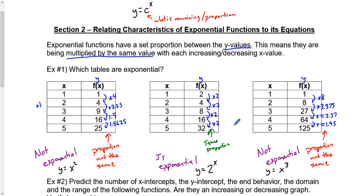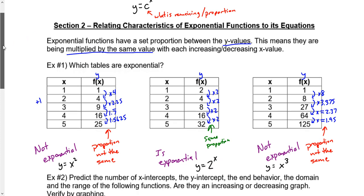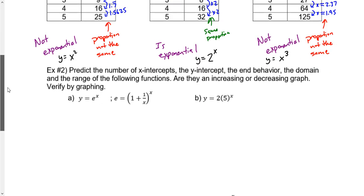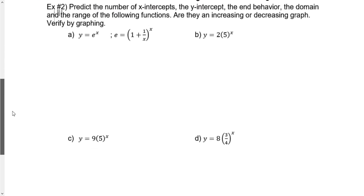Now what if this is going to be different. This is talking about exponentials and this one is still exponential — it's a base to the power of x. But we're going to change one key aspect: we're going to change what the equation looks like. For each of these equations, we're going to predict the number of x-intercepts, the y-intercept, end behavior, domain and range, and whether they are increasing or decreasing graphs. Then we're going to verify by graphing using Desmos, a great free online calculator.